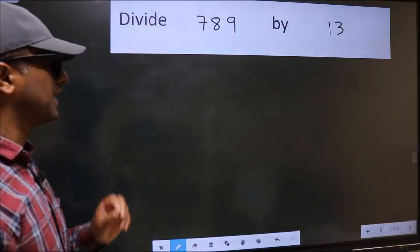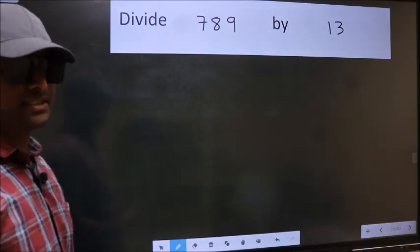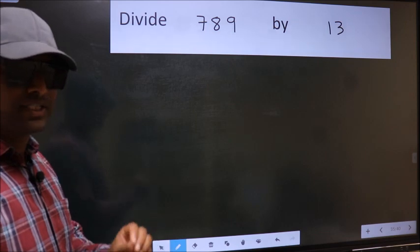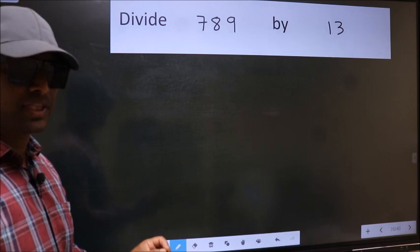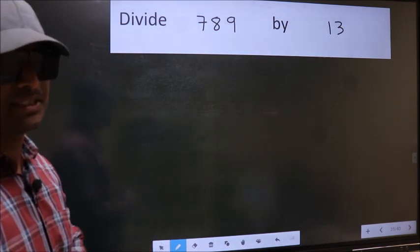Divide 789 by 13. While doing this division, many do this mistake. What is the mistake that they do? I will let you know. But before that, we should frame it in this way.